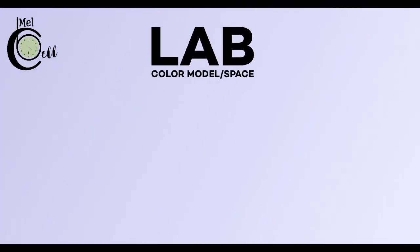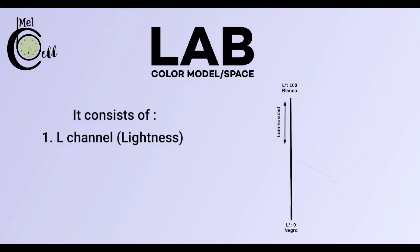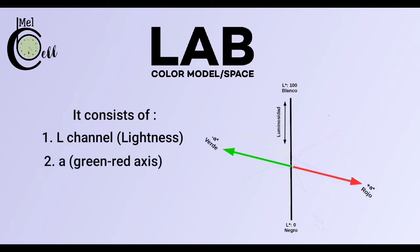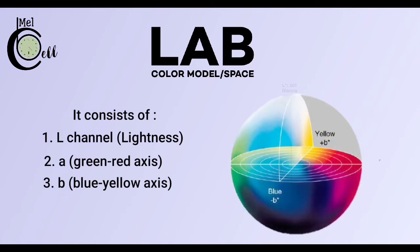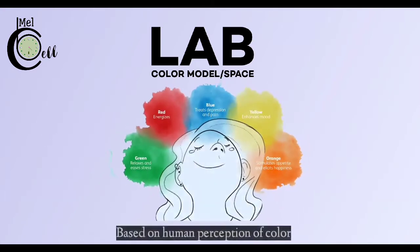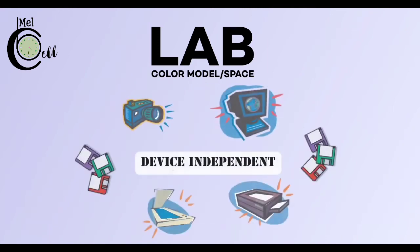The Lab color model consists of one channel — L for lightness — and two channels: A, the green to red axis, and B, the blue to yellow axis. This color model is based on human perception of color and is a device-independent color model.